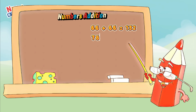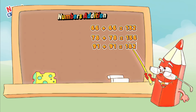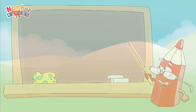Seventy-eight plus seventy-eight is equals to one hundred and fifty-six. Ninety-one plus ninety-one is equals to one hundred and eighty-two. One hundred and five plus one hundred and five is equals to two hundred and ten.